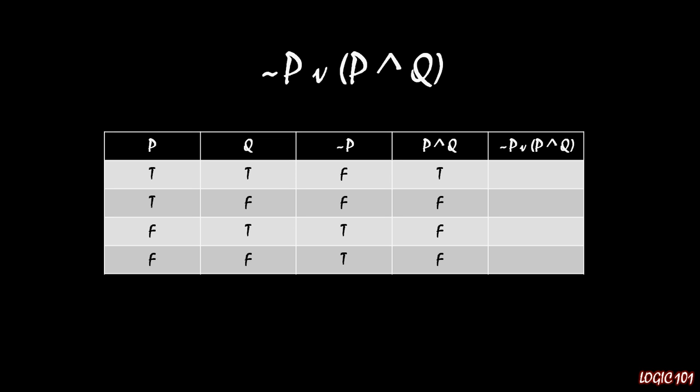And then that allows us to unlock our final step, which is just looking at the truth value of that last column. So we have not P or P and Q. This is a disjunction, so we look for where at least one of those two are true. And because we are looking at not P, as well as P and Q, that means we're looking at rows three and four. So we're looking at rows three and four to see where at least one of those is true.